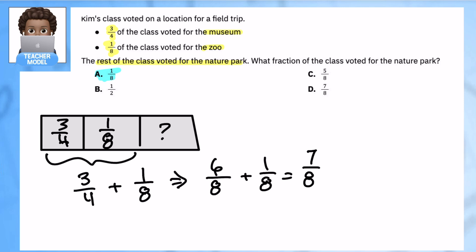So let's get to the next part. So now that we know seven eighths of the class voted for museum or zoo, we're going to do one minus seven eighths. So let's change that, eight over eight minus seven eighths is equal to one eighth.